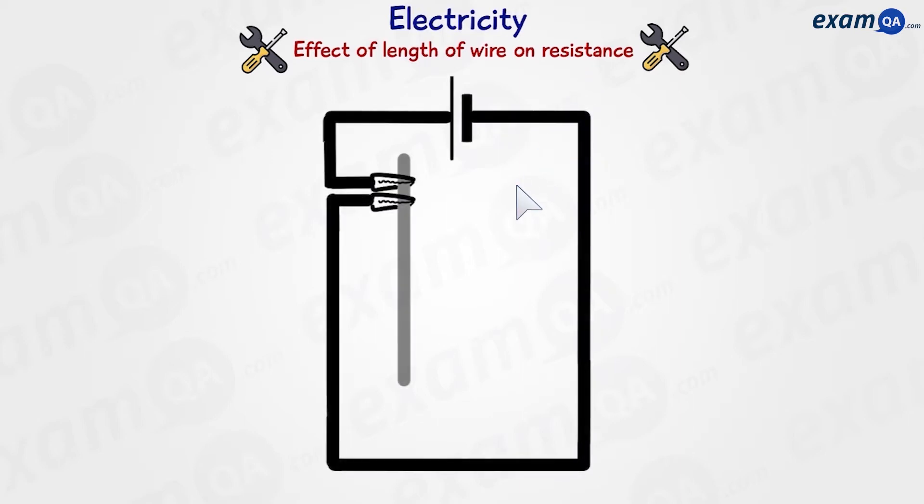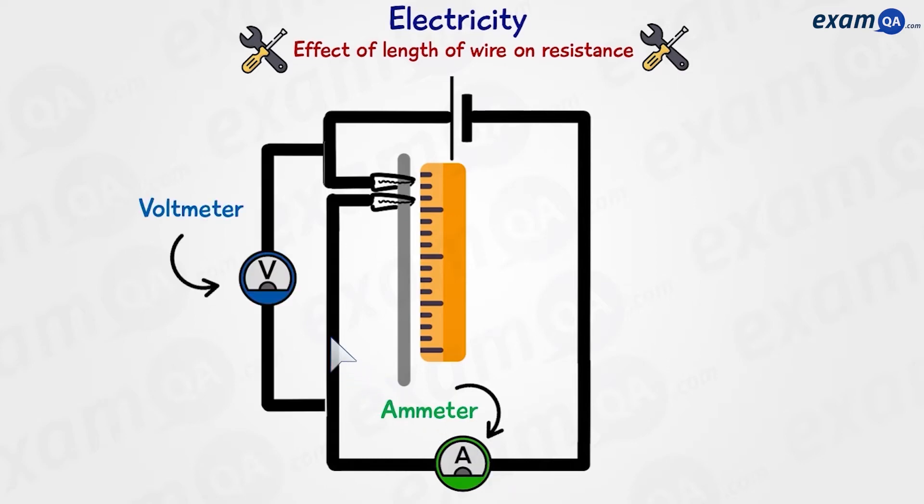We're going to use this kind of circuit as our test. So we have a cell, our test wire, and some crocodile clips. We're also going to have a ruler here so that we can measure the distance between the crocodile clips. We need an ammeter to measure the current in the circuit, and a voltmeter to measure the voltage. Here we have a switch.